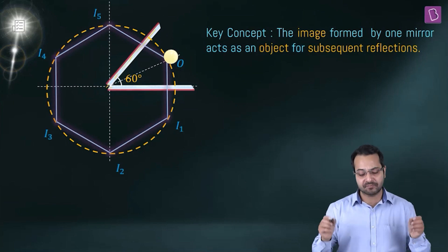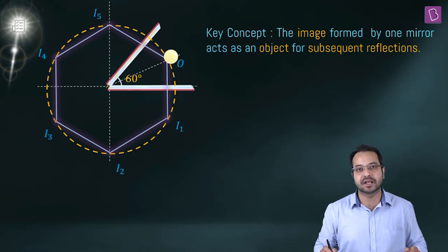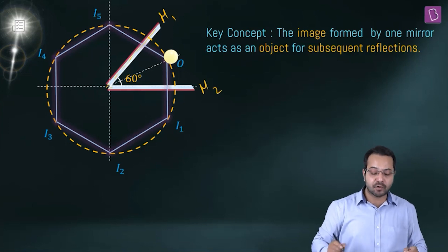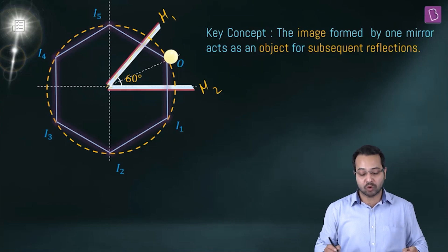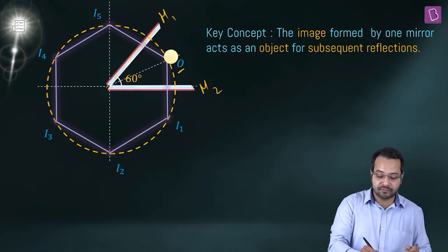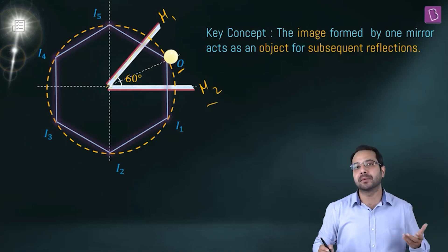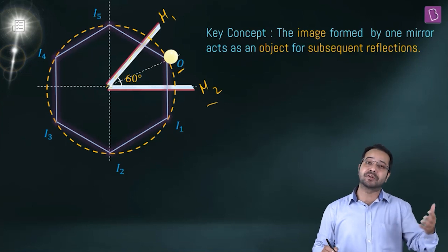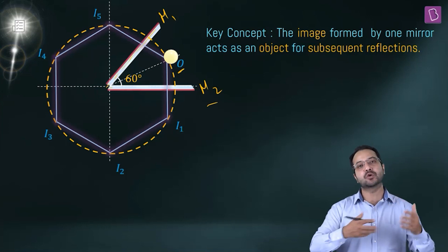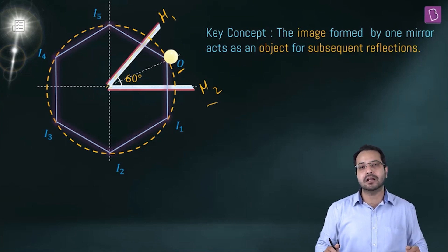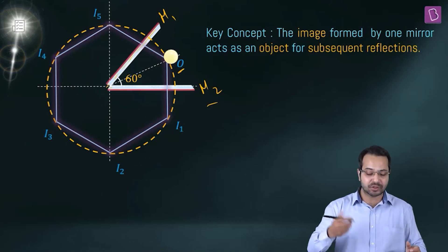The key concept here is that the image formed by one mirror acts as an object for subsequent reflections. So mirror M1 forms an image of object O, which acts as an object for M2, and M2 forms an image that acts as an object for M1 again. This continues, and all we need to do is trace the reflections and count the images.